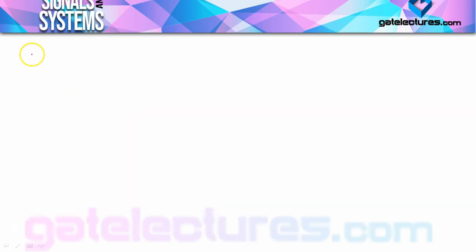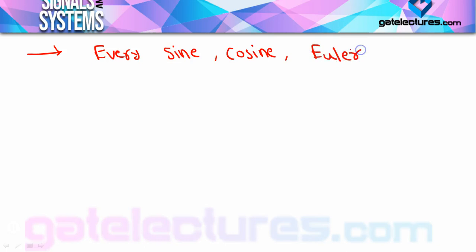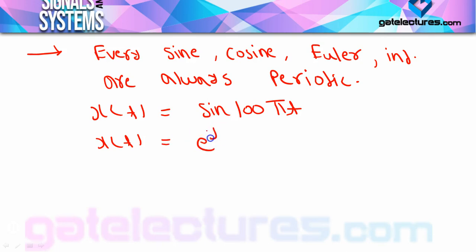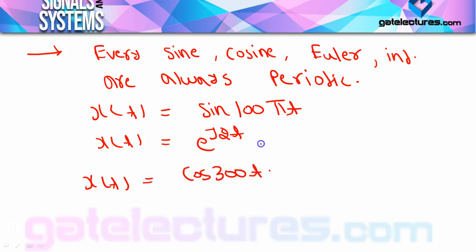कुछ important concepts दिमाग में रखने हैं: every sine, cosine, and Euler signal is always periodic if they are individually given। तो अगर single दिये हुए हैं, individually दिये हुए हैं, तो हमेशा periodic होंगे। जैसे x(T) = sin(100πT), या x(T) = e^(j2T), या x(T) = cos(300T)। किसी भी format में given हो, अगर individually given है, तो हमेशा periodic है। Check करने की जरूरत नहीं है।